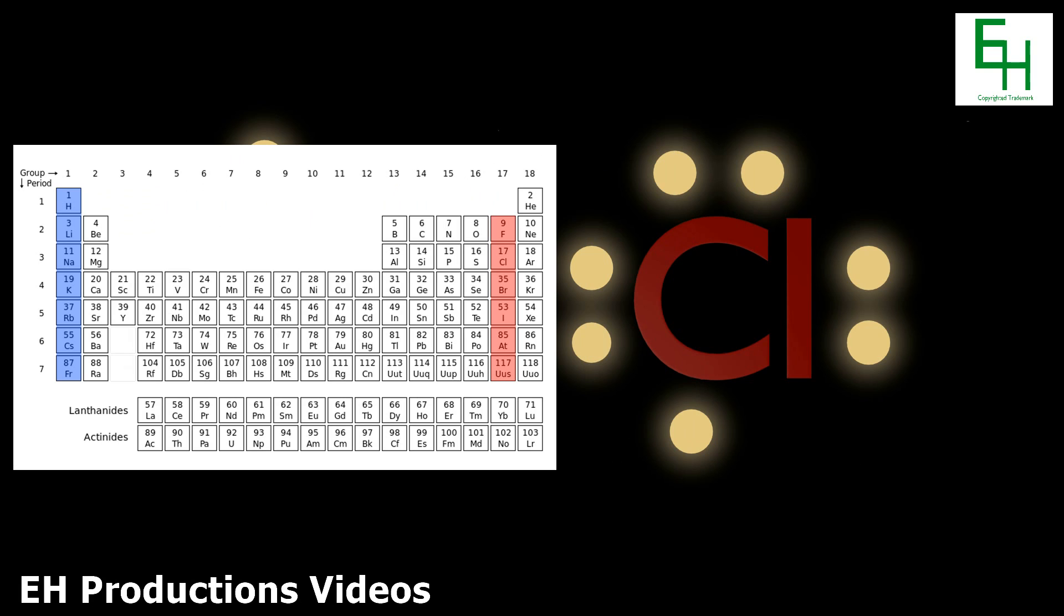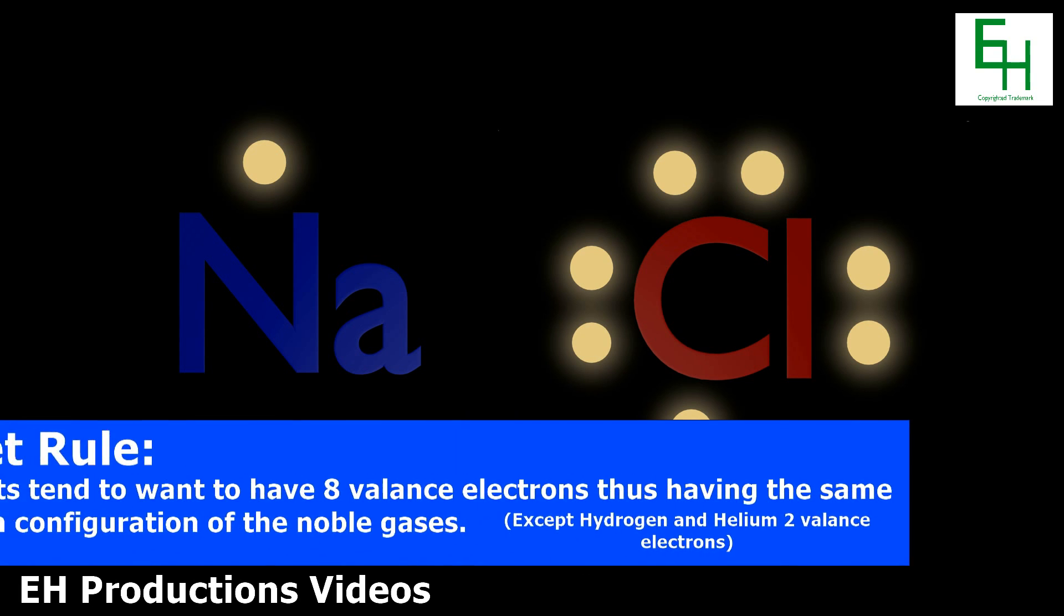Generally, atoms will want to have 8 valence electrons because they want to be stable like the noble gases. This is called the octet rule.